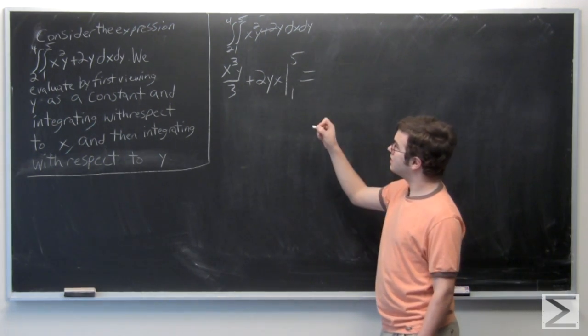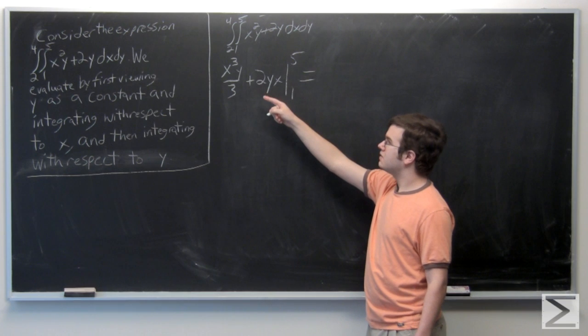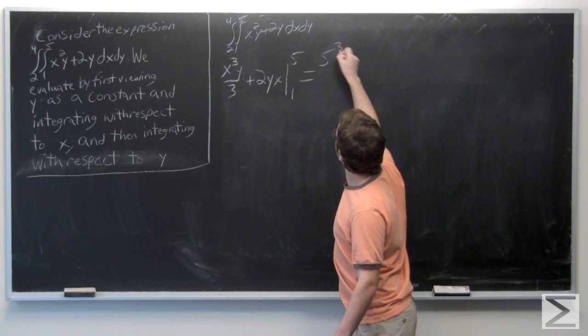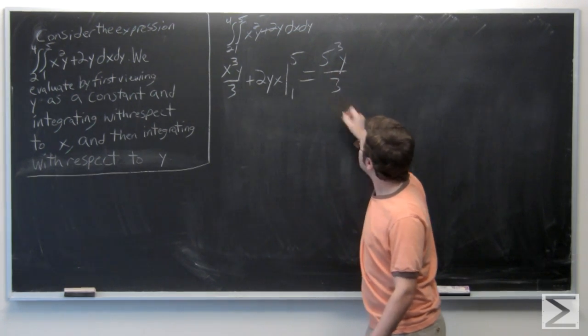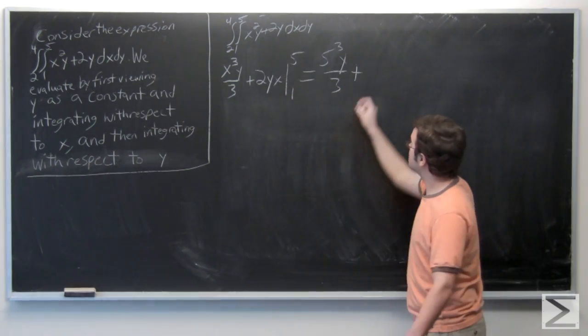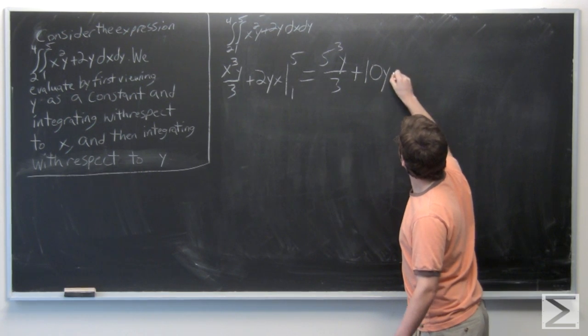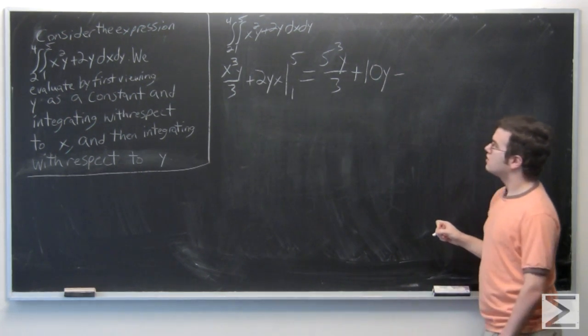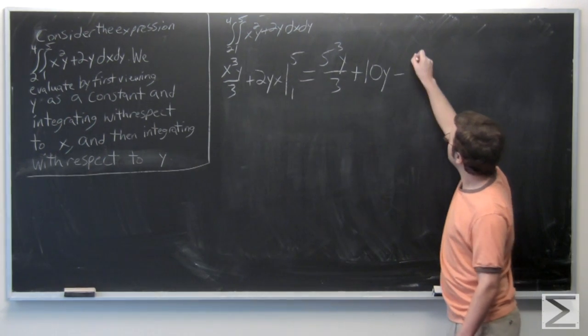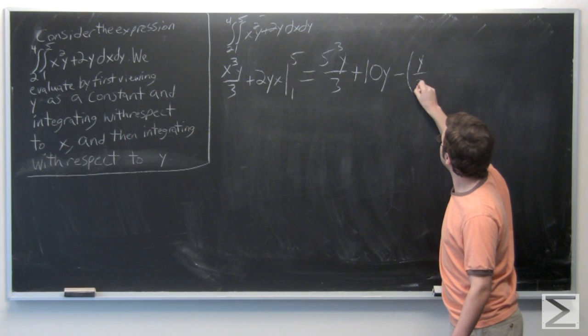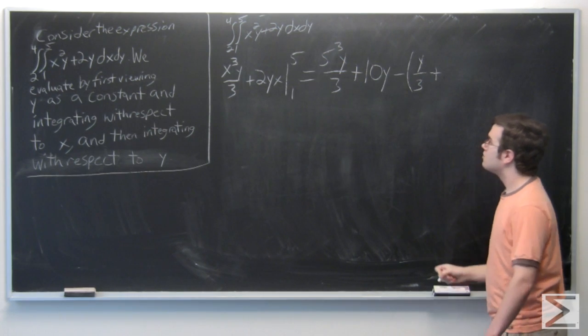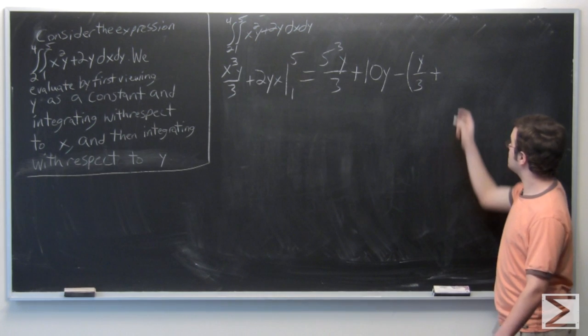And so when evaluating, we get 5 to the third, y over 3, plus 5 times 2 times y, which is 10y, minus 1 to the third, y over 3, which is just y over 3, plus 1 times 2 times y, which is just 2y.